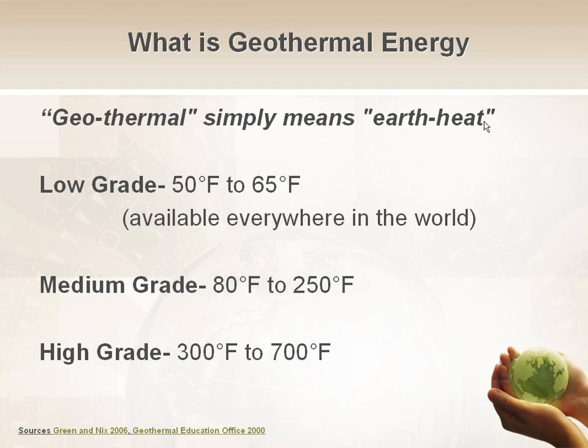Geothermal basically means Earth's heat. There are three different classifications: low-grade, medium-grade, and high-grade, and they're all based on ground temperatures. Low-grade is from 50 to 65 degrees, and it's available everywhere in the world. Medium-grade is 80 to 250 degrees. High-grade is 300 to 700 degrees. Low-grade is what we actually use for geothermal in the HVAC marketplace.